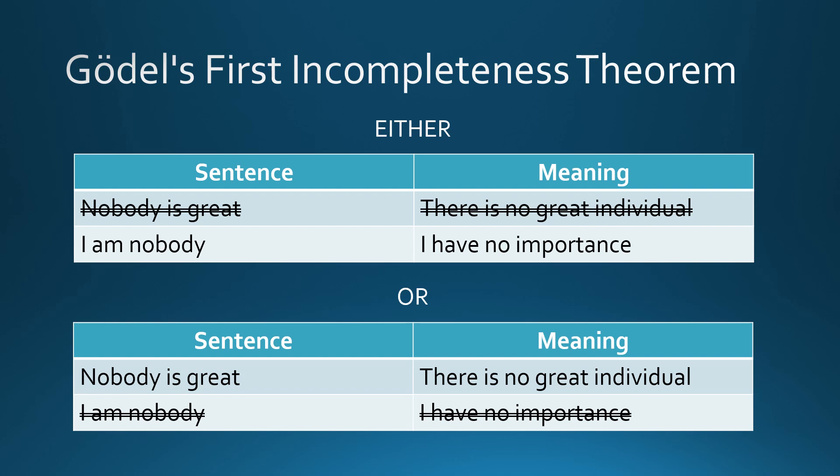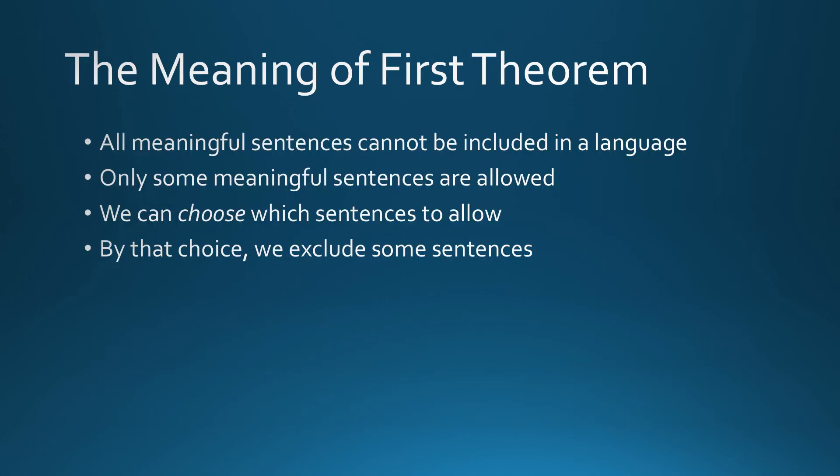Since giving each word multiple meanings leads to a contradiction, to avoid these contradictions each word must be given only one meaning. This means that either one of the two sentences — 'nobody is great' or 'I am nobody' — must be removed from rational conversations. Since these are meaningful sentences, by removing them from rational conversations the discourse becomes incomplete. This is Gödel's first incompleteness theorem.